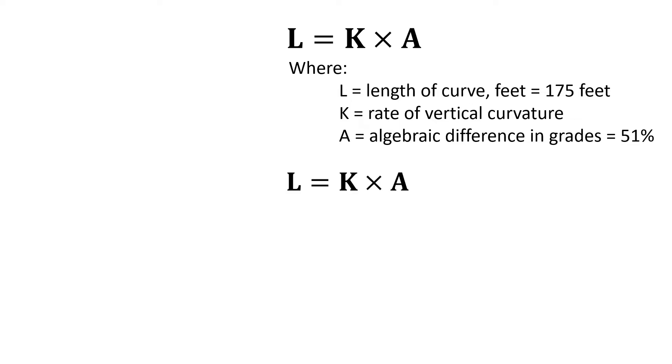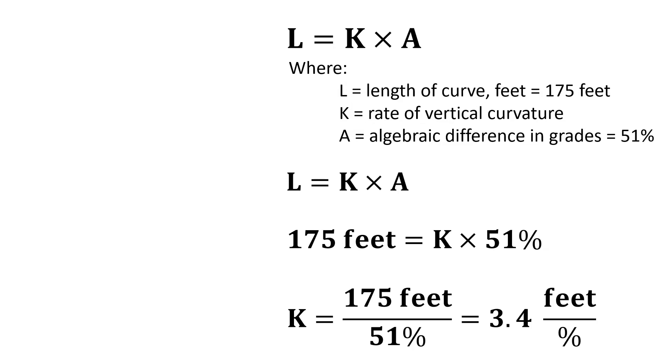We're going to take that equation, L equals K times A, we're going to plug in our known values. So we measured our length of 175 feet, and that's equal to K times 51%, which is our algebraic difference in grades. So we can solve that for K. K equals 175 feet divided by 51%, gives us a rate of vertical curvature of 3.4 feet per percent.